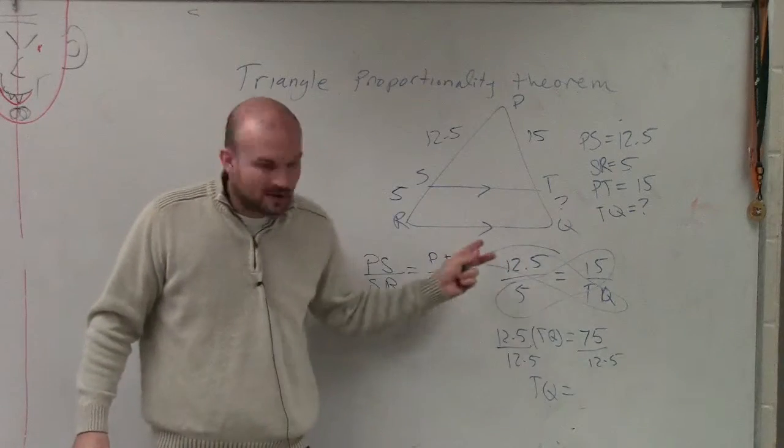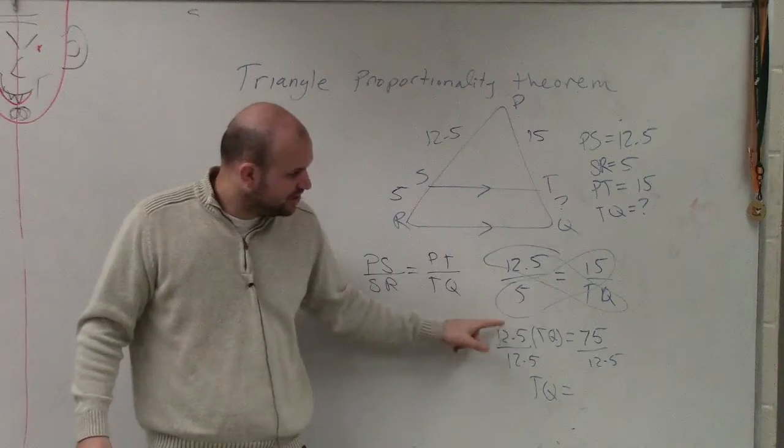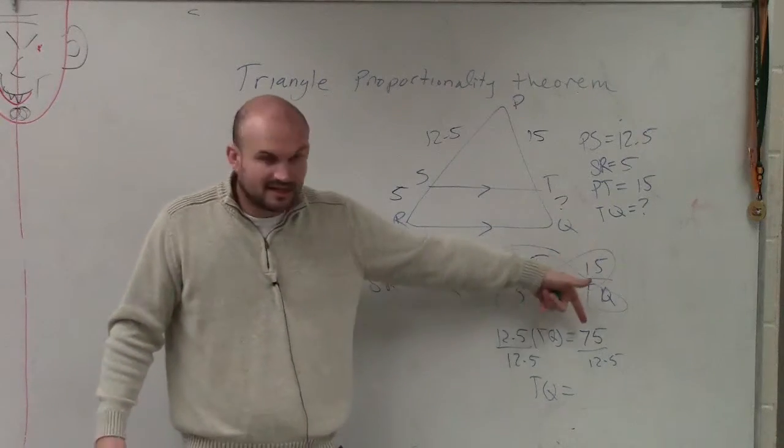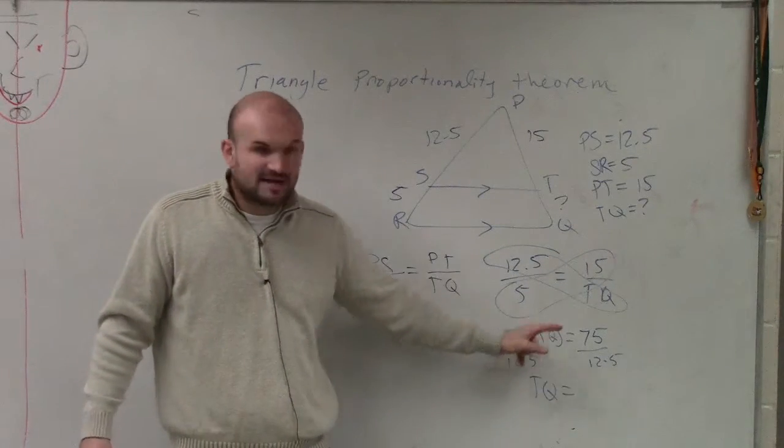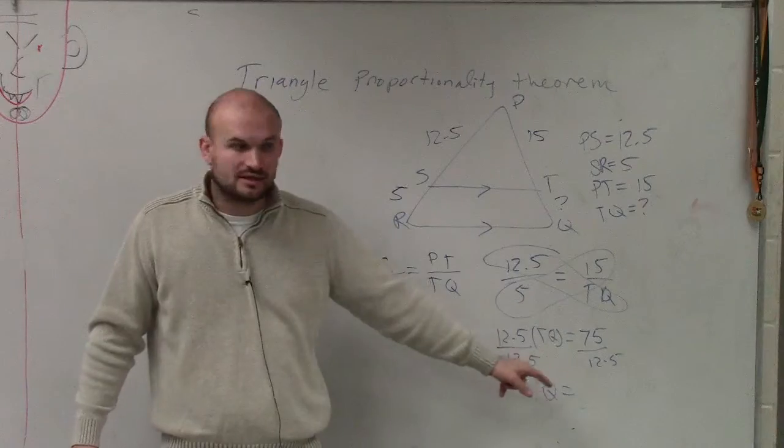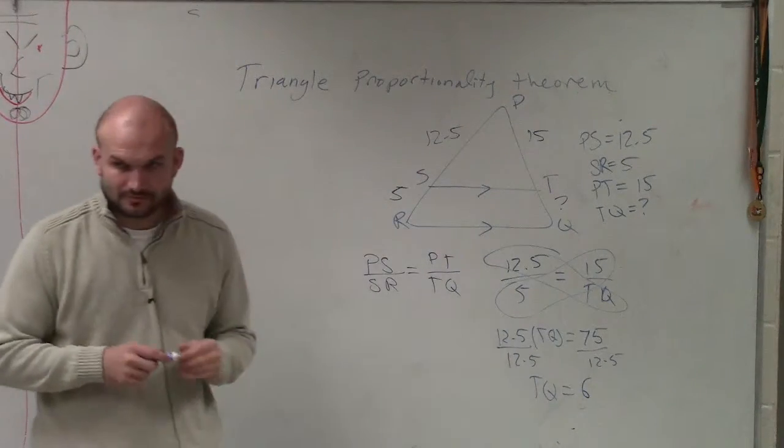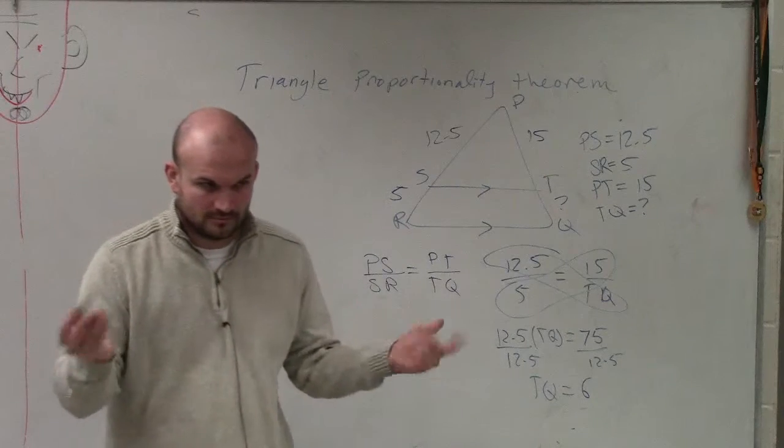Apply your cross-products. 12.5 times TQ is 12.5 times TQ. We don't know that value. 5 times 15 is 75. Divide by 12.5 on both sides and you get 6. So TQ equals 6, and there you go.